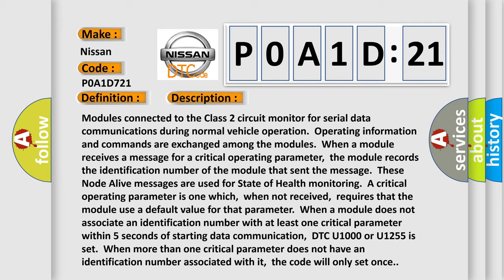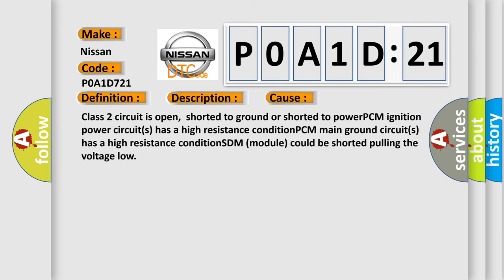This diagnostic error occurs most often in these cases: Class 2 circuit is open, shorted to ground or shorted to power. PCM ignition power circuits has a high resistance condition. PCM main ground circuits has a high resistance condition. SDM module could be shorted pulling the voltage low.